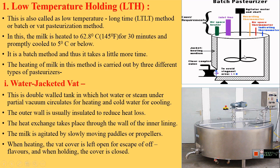You can see here the diagrammatic representation of the water-jacketed vat type of pasteurizer — a double-walled tank through which either hot water or steam under partial vacuum circulates for heating, or cold water for cooling. Agitation is carried out by agitators or paddles. This is the actual image of the water-jacketed vat used in dairy industries for pasteurization.